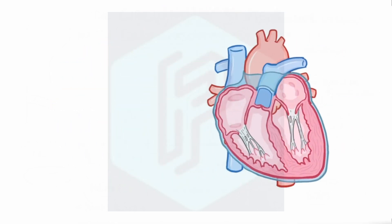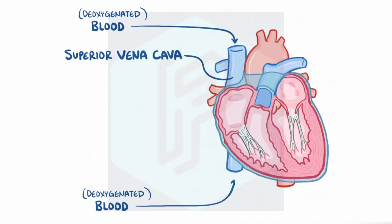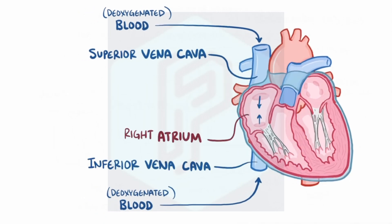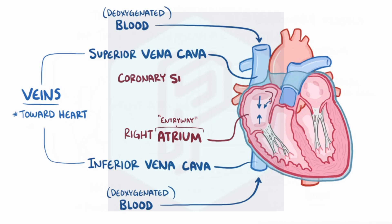Alright, so looking at the right side of the heart, deoxygenated blood enters either through the top, through a blood vessel called the superior vena cava, or the bottom, through another blood vessel called the inferior vena cava, in the right atrium, where atrium means entryway. Both vena cava are veins which bring blood towards the heart. There's also a tiny third opening into the right atrium called the coronary sinus, which collects blood from coronary vessels returning from the myocardium.